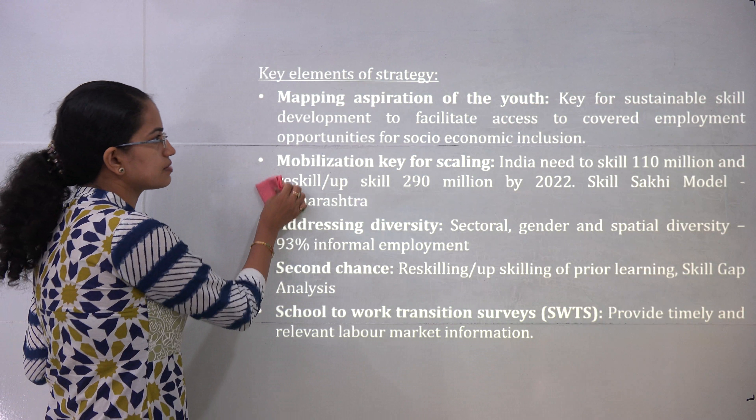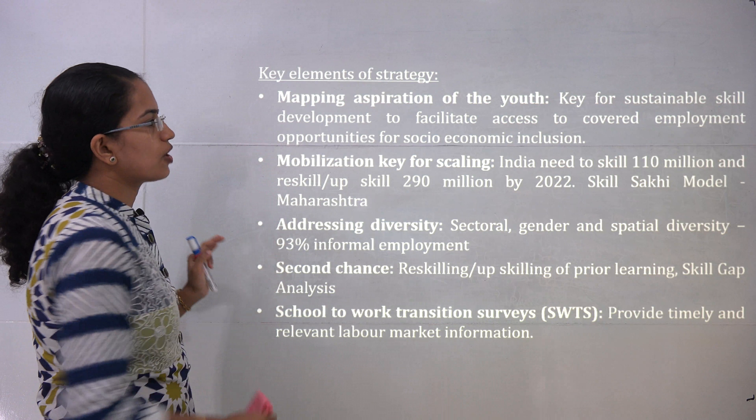The key elements of leveraging youth power include mapping the aspiration of the youth covering employment opportunities, and mobilizing scaling — India needs to skill 110 million people and reskill around 300 million people by 2022. The Skill Saki model in Maharashtra is one such example. Addressing diversity means covering sectoral, gender and spatial diversity, with 93% employment in the informal sector that should be moved to the formal sector. School-to-work transition services should also be conducted.